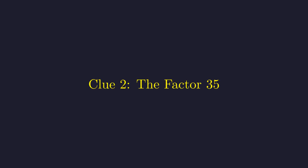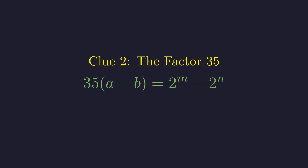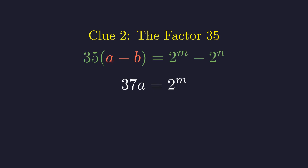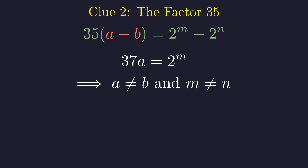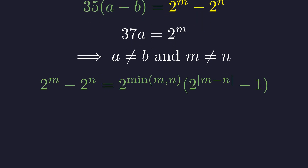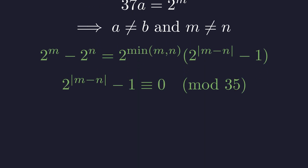Now let's examine the second relationship involving factor 35. Consider the case where a = b: the left side becomes 0, forcing m = n. Substituting into our first equation gives 37 · 2a = 2^(m+1), so 37a = 2^m — impossible since 37 is an odd prime. Therefore a ≠ b and m ≠ n. Since a ≠ b, the left side is a non-zero multiple of 35. Since 35 is odd, it cannot divide powers of 2, so 35 must divide 2^|m−n| − 1. This is our second critical condition.